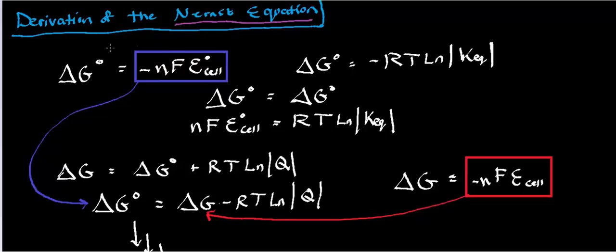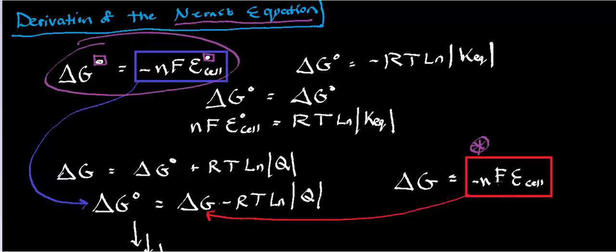One simplified form of the Nernst equation is that delta G at equilibrium is equal to negative NFE cell at equilibrium. Remember, anytime you see these little degree signs as a superscript on a variable, that means it's at equilibrium. The form you would normally use to calculate delta G not at equilibrium is: delta G not at equilibrium equals negative NF times the cell potential not at equilibrium.